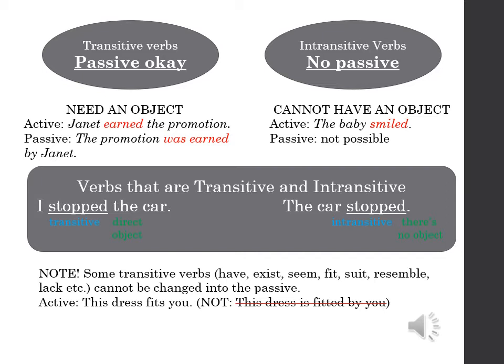Some verbs can be transitive in one sentence and intransitive in another. 'I stopped the car' vs. 'The car stopped' — in the second sentence there is no object. Also, some transitive verbs — for example have, seem, suit, resemble, fit — cannot be changed into the passive. 'This dress fits you' cannot be changed into the passive; 'This dress is fitted by you' is totally incorrect.